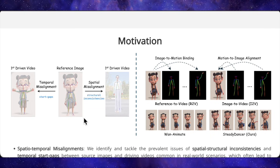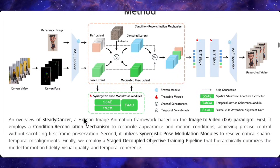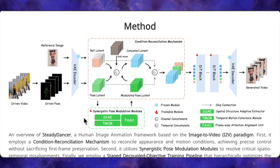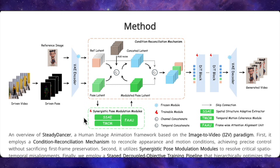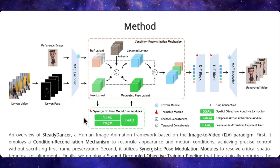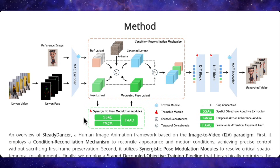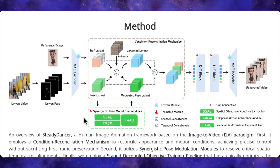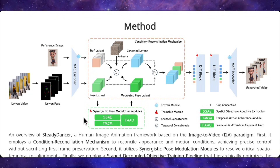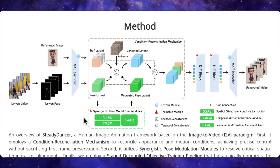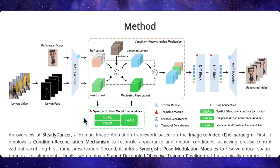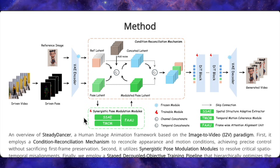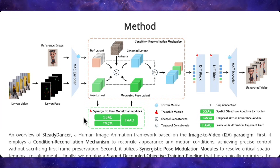Most existing animation models, including the original WAN Animate, use what's called a reference-to-video paradigm, which basically means they try to bind your character's appearance onto whatever motion you give them. That sounds fine in theory, but in practice it's really loose. If your reference image and your driving pose don't match up perfectly in terms of body proportions, camera angle, or starting position, the model just does its best guess, and you end up with identity drift, weird face changes, and those jarring jumps at the start of the video.